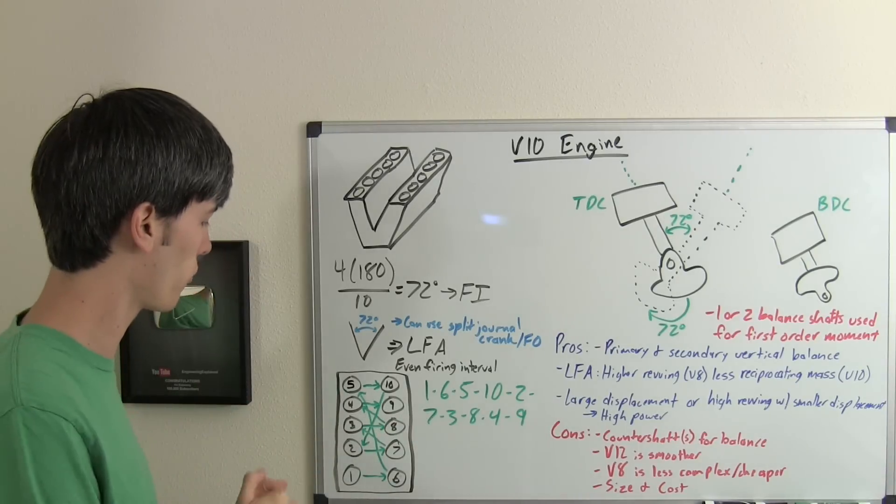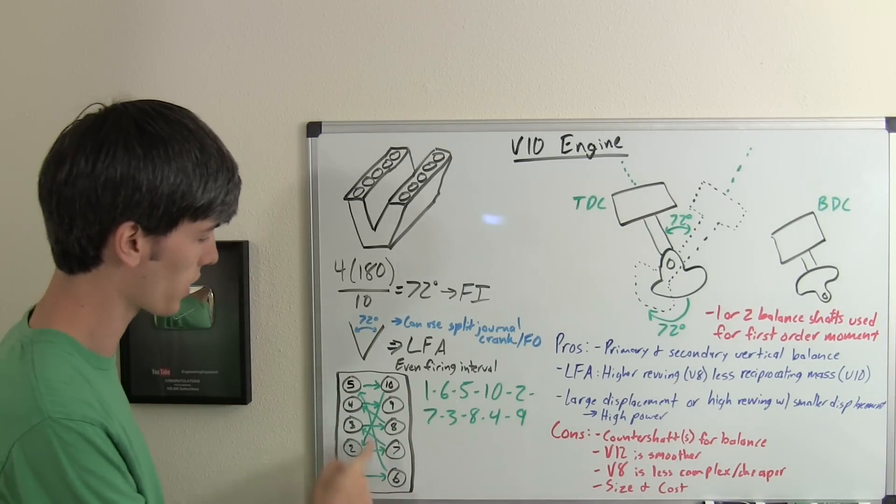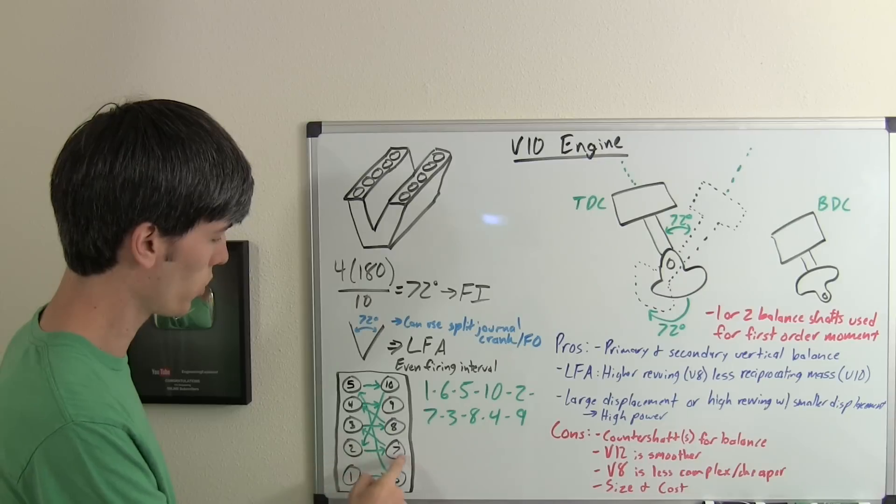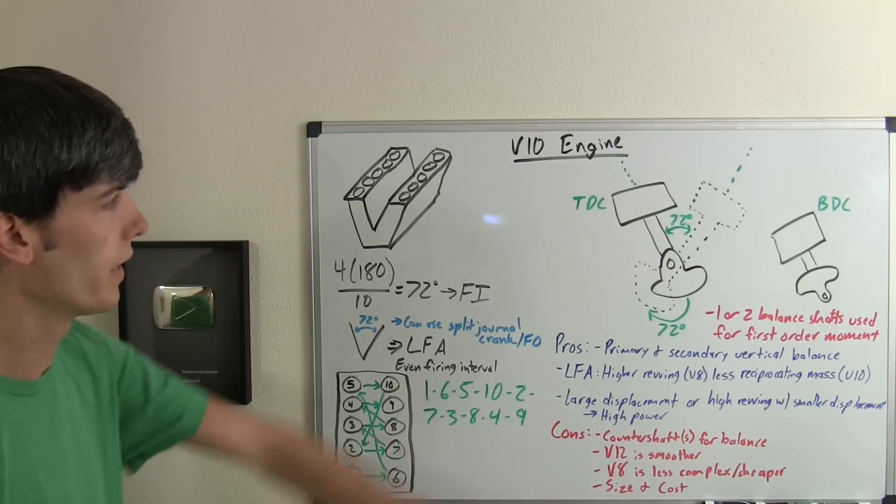Checking out the firing order, this is for a Ford or BMW V10: 1, 6, 5, 10, 2, 7, 3, 8, 4, 9. 1 through 5 on the left, 6 through 10 on the right.